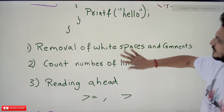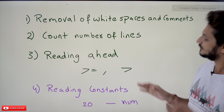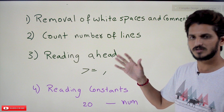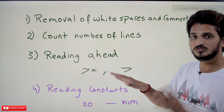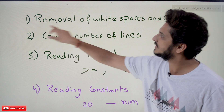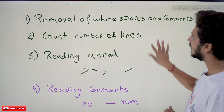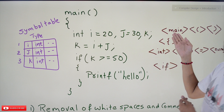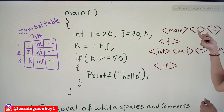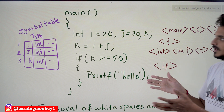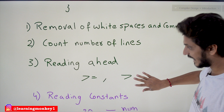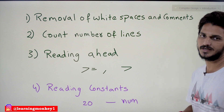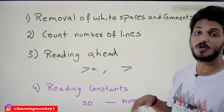Let's understand some of the responsibilities so you get a better understanding of what the lexical analyzer does. The first responsibility is removal of white spaces and comments. After taking the input, white spaces are not considered — spaces between tokens like 'main' and the brackets are eliminated. Even tab spaces are eliminated, and comments should also be eliminated. The second responsibility is to count the number of lines — how many lines the program has, what the last line is.